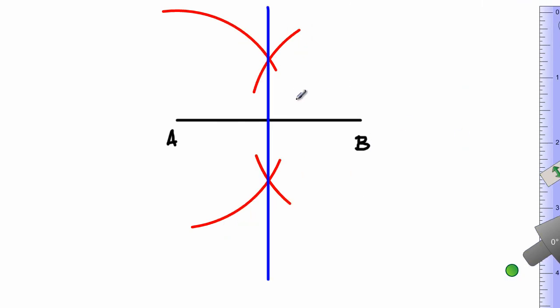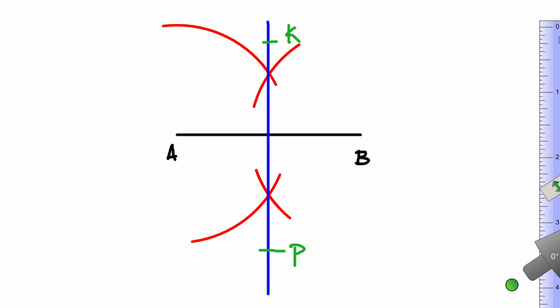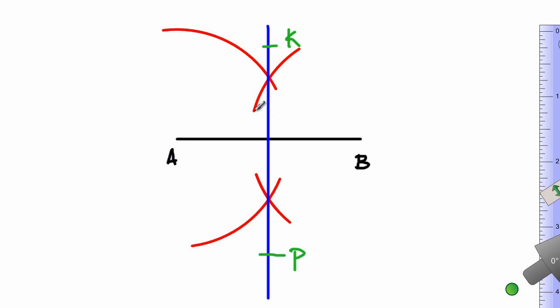Now I can say then that, let me change my color to green, so I can call the blue line, let's call that PK. Let's just give that a name and the name of that is PK. Let's just pull this down a bit so that we can see what is happening. Now I can say then that the line PK is the perpendicular bisector of the line AB, because PK cuts AB into two equal parts.